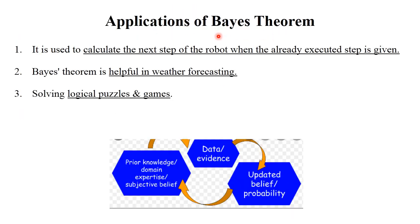Some applications of Bayes' theorem include weather forecasting, where a proper understanding of the environment is required for accurate predictions; solving logical puzzles and games; and calculating the next step of a robot in online robotics games. For all these prediction purposes, you require prior knowledge or expertise in the particular environment, and then you calculate the probability. Hope you understood Bayes' theorem with this example — thank you, keep learning and keep watching.